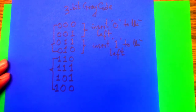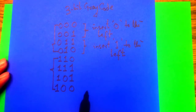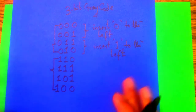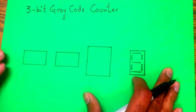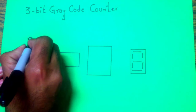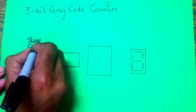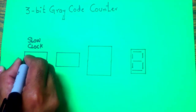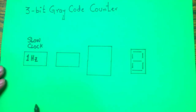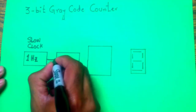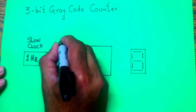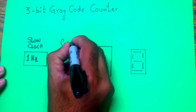This 3-bit gray code is what we are going to implement today using a 1 Hz frequency clock on the Basys 3 board. The first module we need is a slow clock with a frequency of 1 Hz, meaning the gray code counter changes every second.